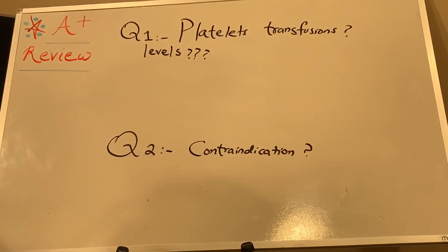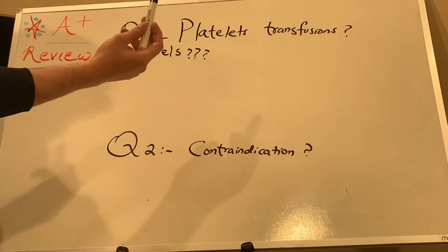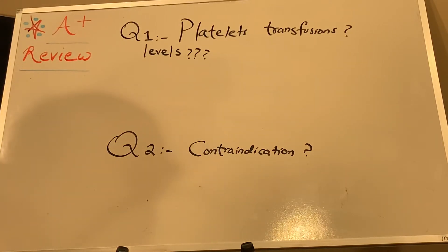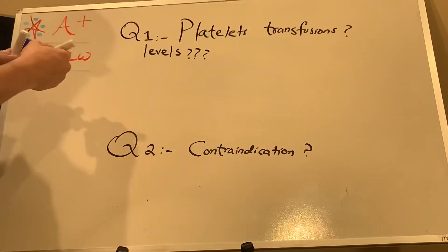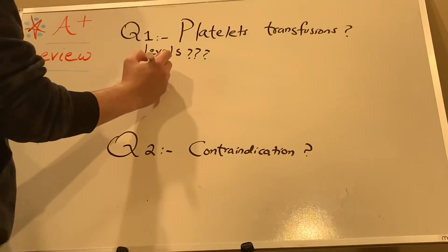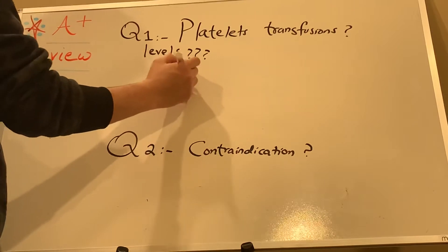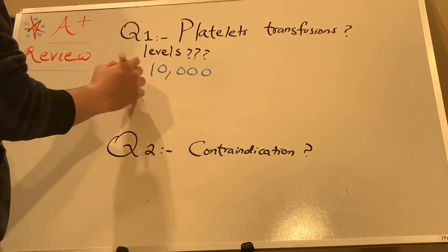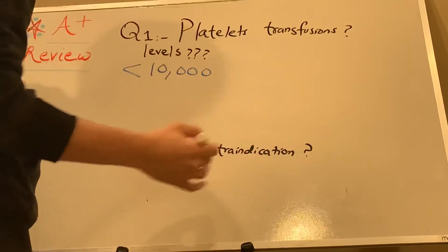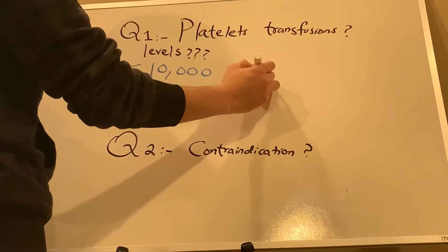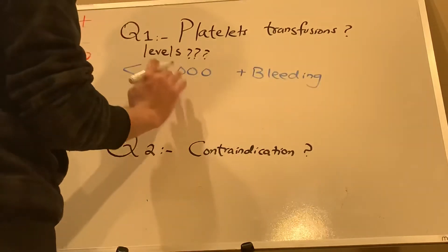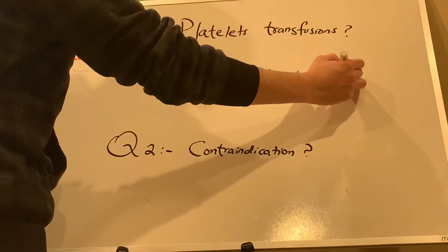Sometimes you need to think about when is the right time to start platelet transfusion and what are the levels. Basically, when you have platelets lower than 10,000, certain criteria have to be followed. Less than 10,000 and we have to give prophylaxis access when the patient is having bleeding with less than 10,000 platelet level — that is one of the prophylaxis criteria.